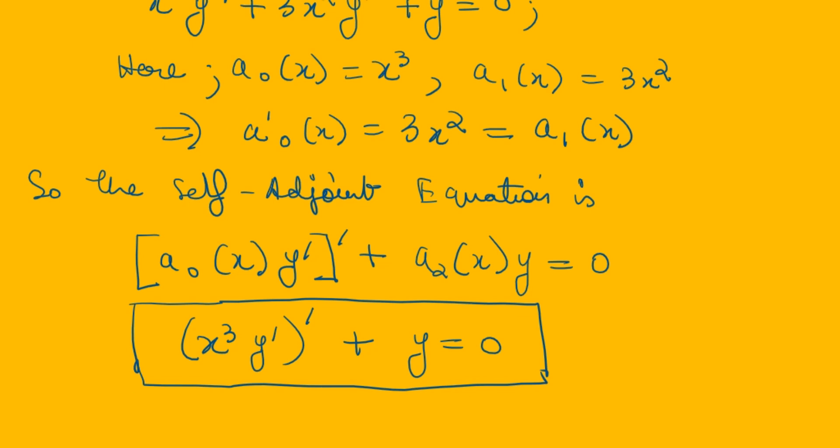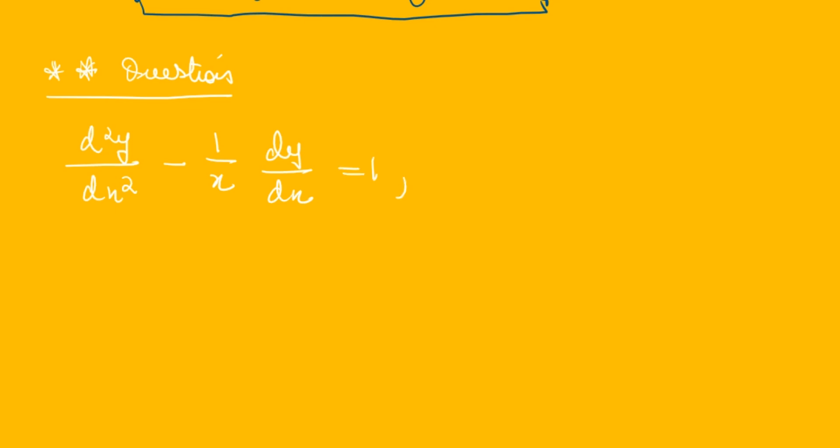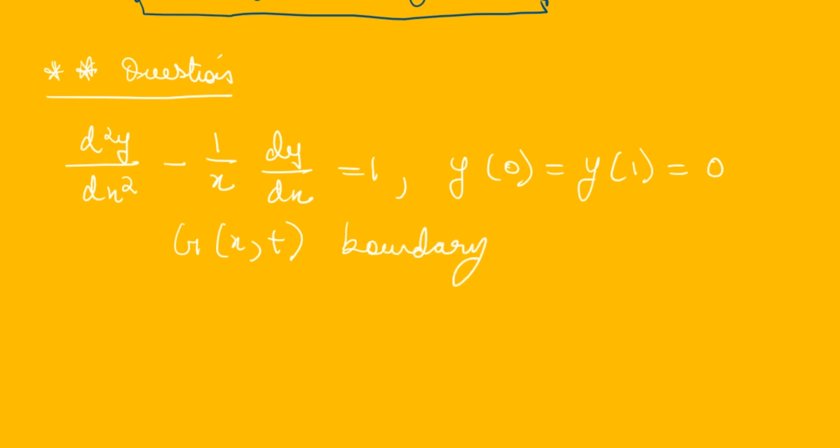Now we move on to a bonus question — a very important question that appeared in one of the exams. The question is: d²y/dx² − (1/x) dy/dx = 1, with boundary condition y(0) = y₁ = 0. We need to find G(x, t), that is, Green's function for this boundary value problem.